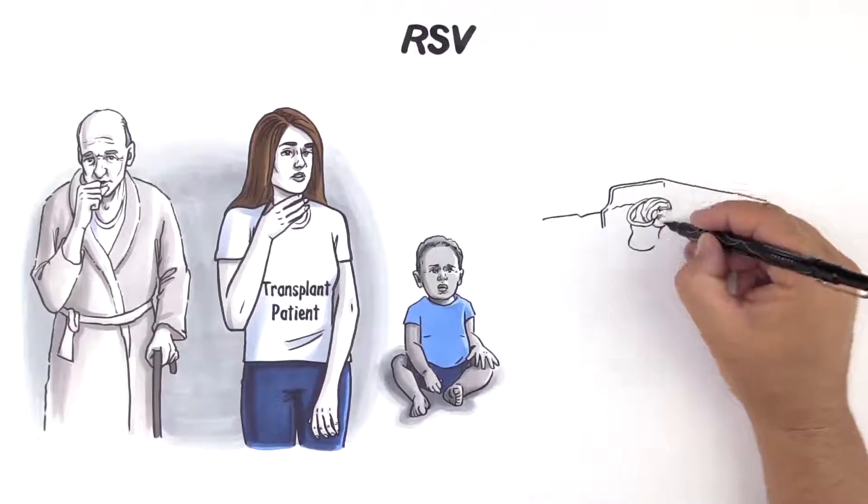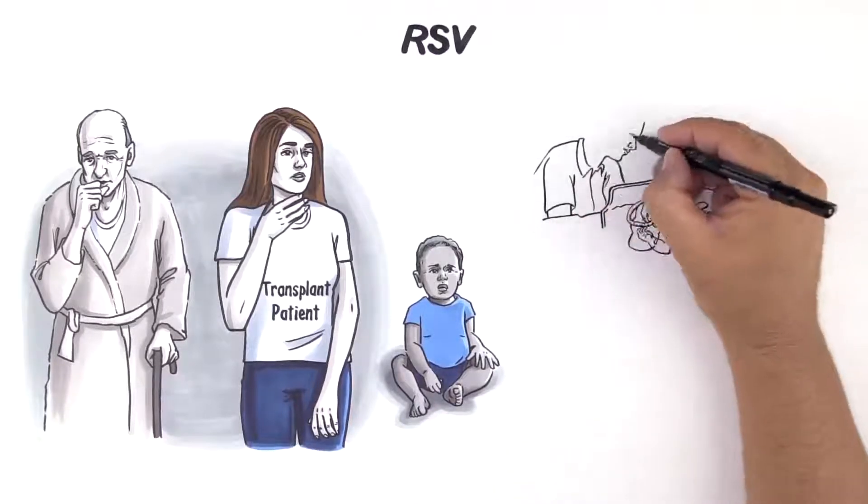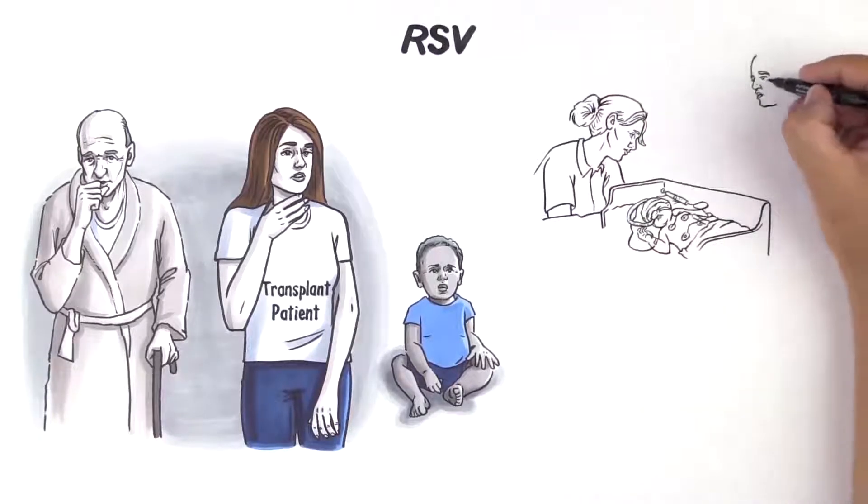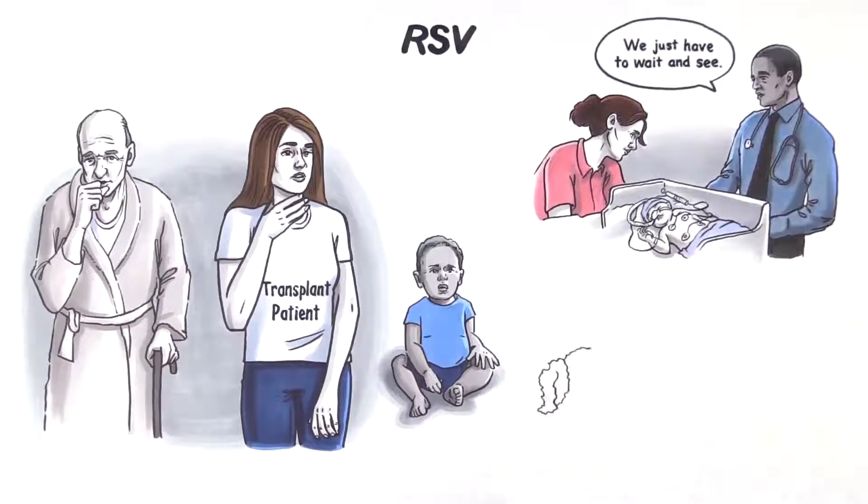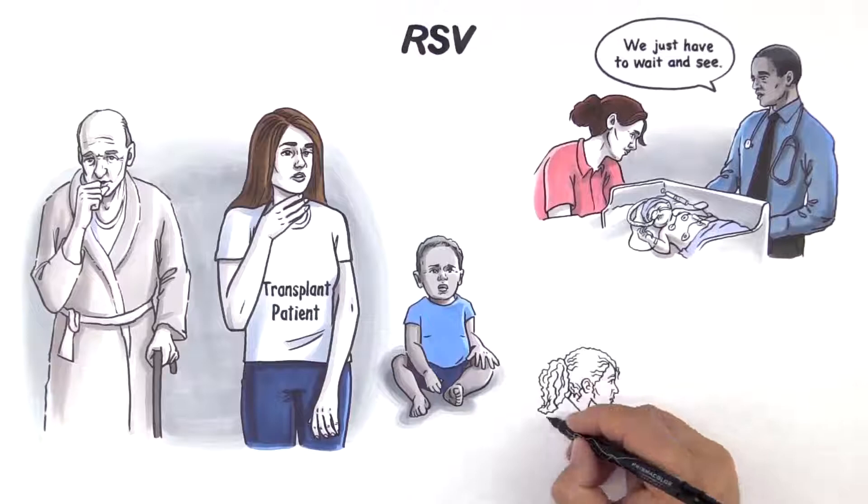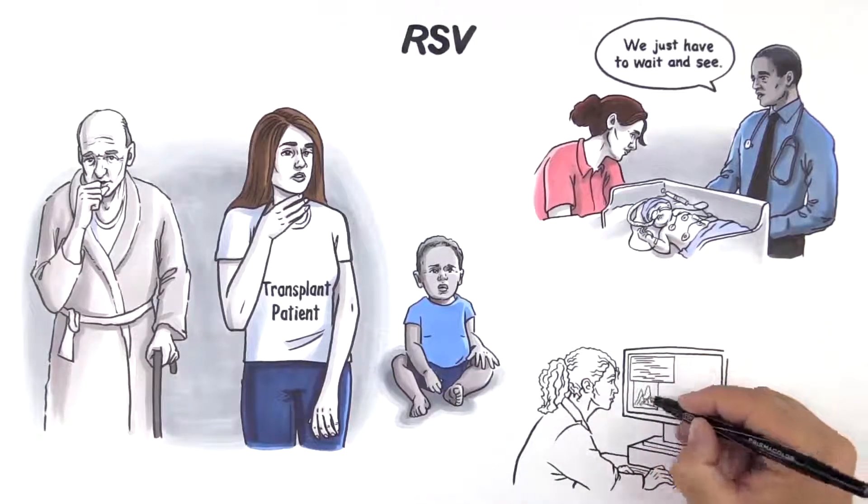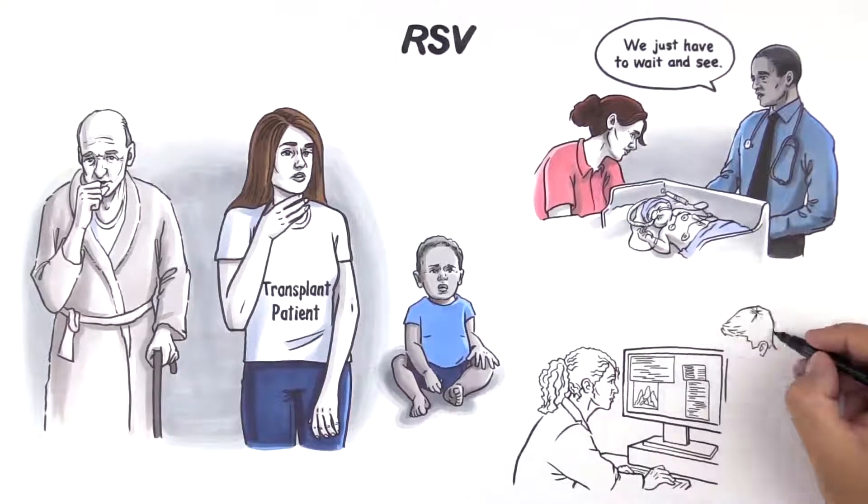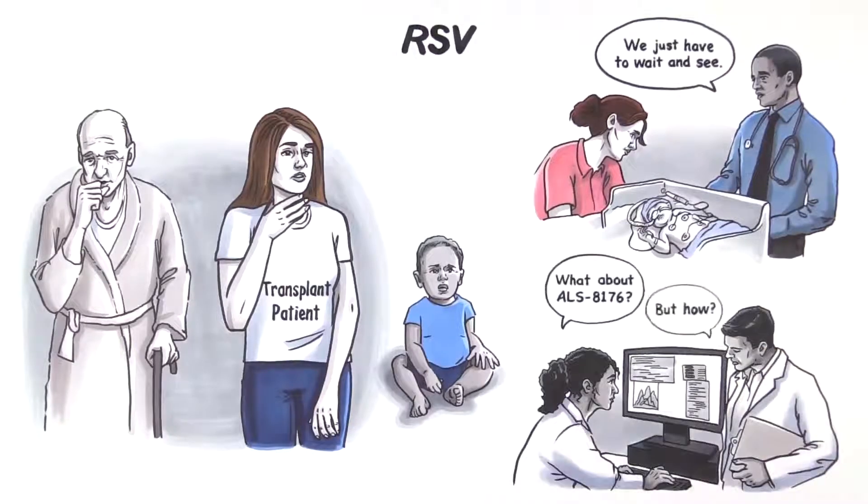Currently, there is no effective treatment for an active RSV infection and no precedent for regulatory acceptance of an accelerated development pathway for RSV therapeutics in infants. ALS-8176, an anti-RSV compound, had its safety and PK characterized in clinical trials in healthy adults and is being evaluated as a potential treatment for RSV infections in small children.